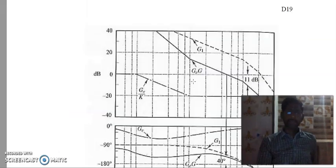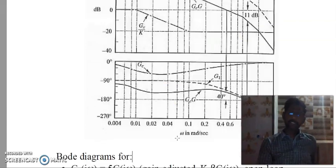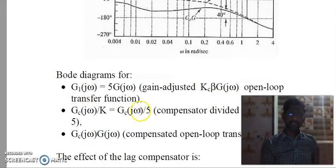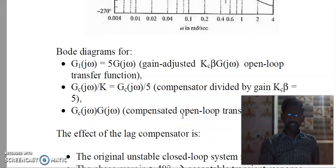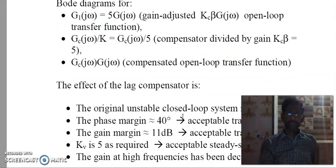This is the Bode plot of G of S. This is the Bode plot of compensated Jc of S. Bode diagram for G1 of J omega, where G1 of J omega equal to 5 G of J omega. The gain adjusted Kc beta of J omega open loop transfer function. Gc of J omega divided by K, that is equal to Gc of J omega divided by 5. The compensator divided by gain Kc beta equal to 5. The Gc of J omega into G of J omega is the compensated open loop transfer function.